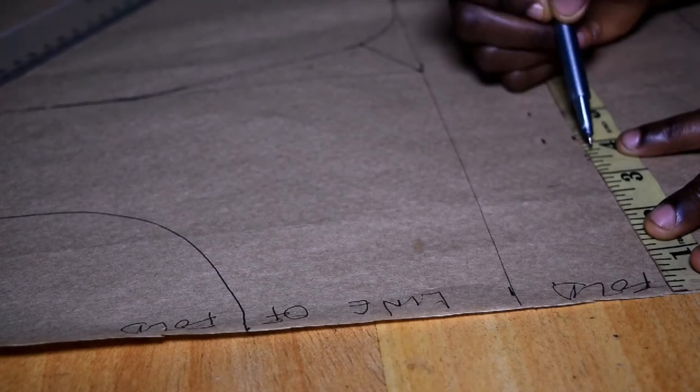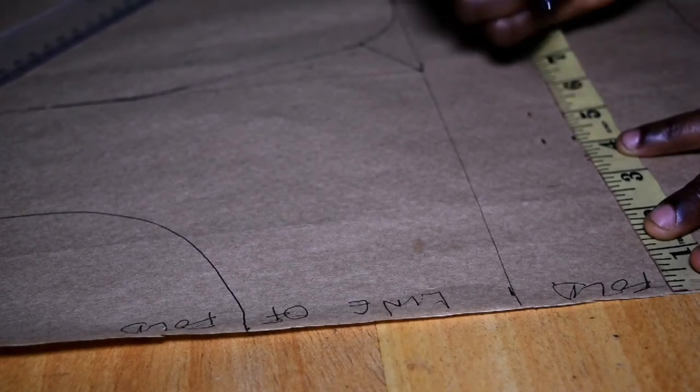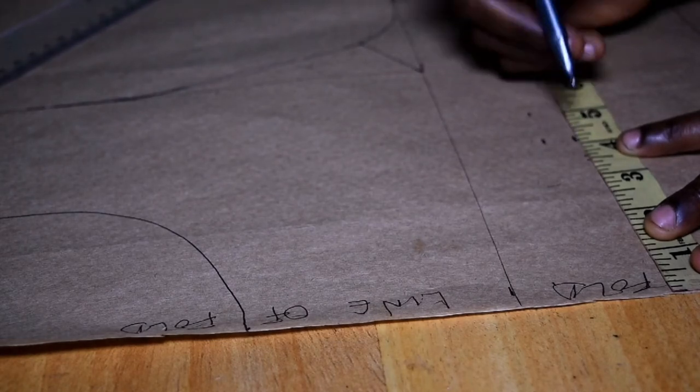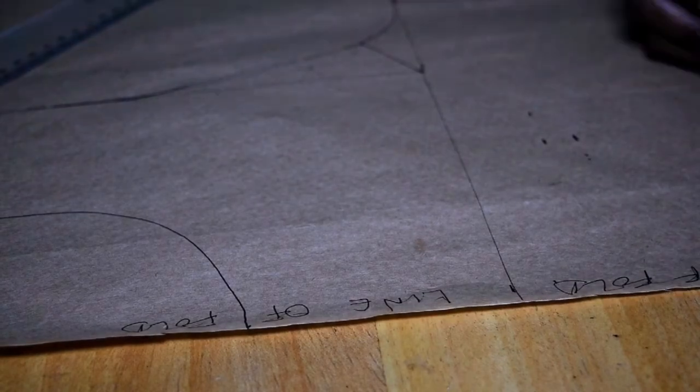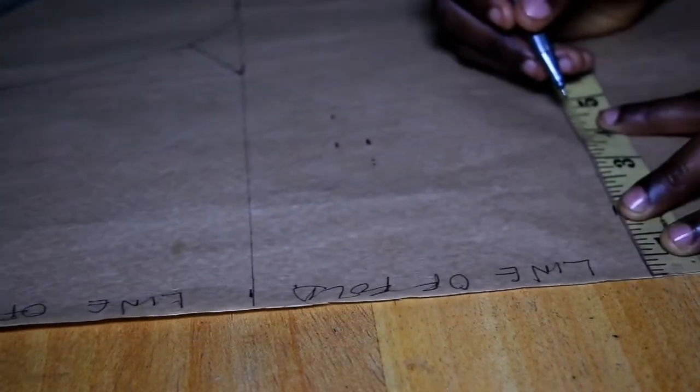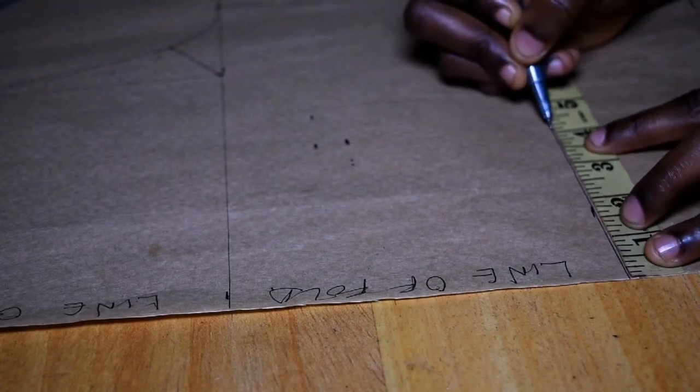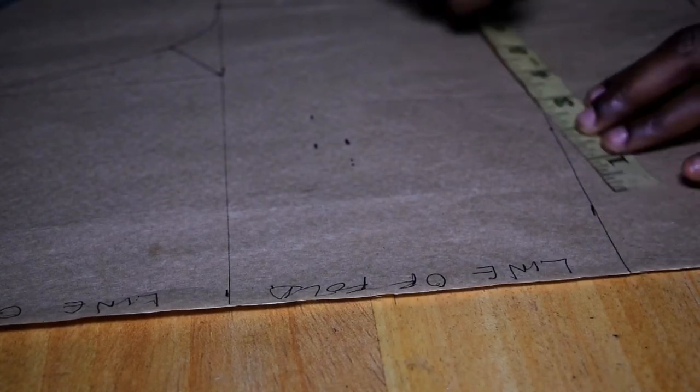So once I mark my center, the center of my darts, I move to my under bust and measure out my darts allowance of 1.5 inches, so having 0.75 inch on each side of the central line, which I'm going to show you now.